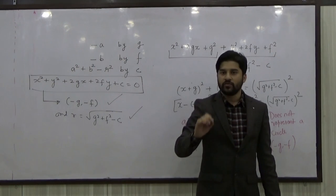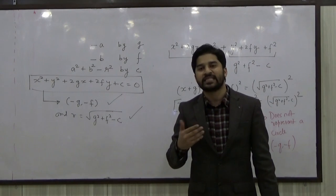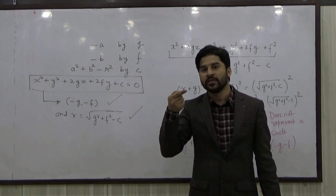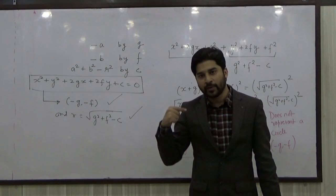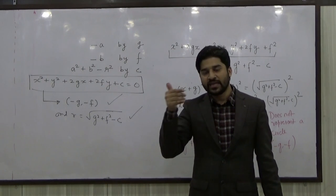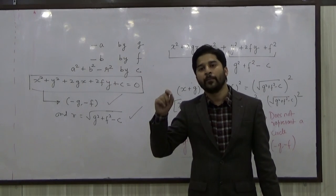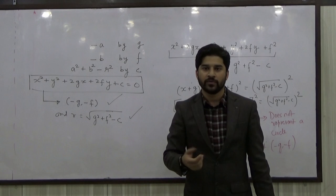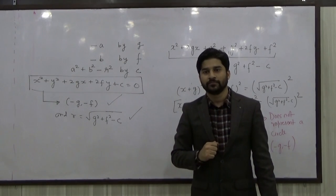So whenever you see any equation in the form X² + Y² + 2GX + 2FY + C = 0, the center becomes (−G, −F). That is, the coefficient of X divided by −2 and the coefficient of Y divided by −2 give you the abscissa and ordinate of the center respectively. The abscissa squared plus the ordinate squared minus the constant C gives you the radius squared. This is how we read the center and radius directly from a circle equation.